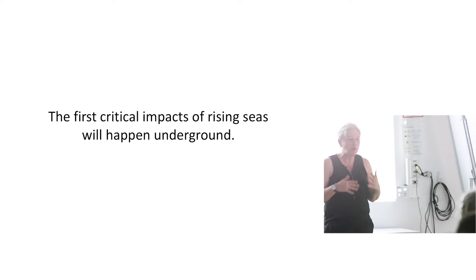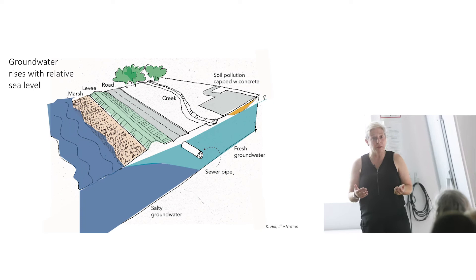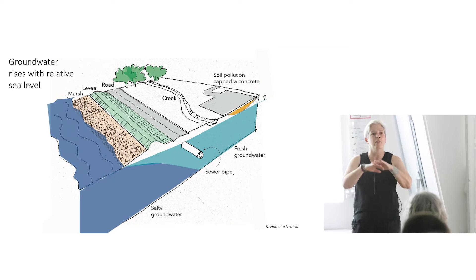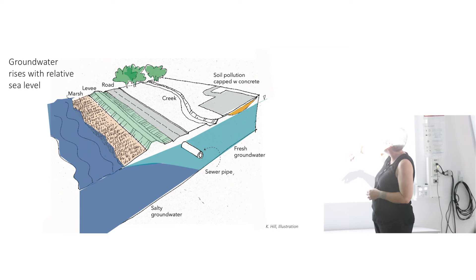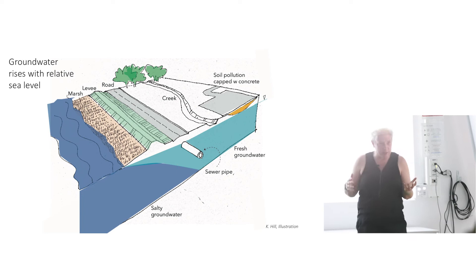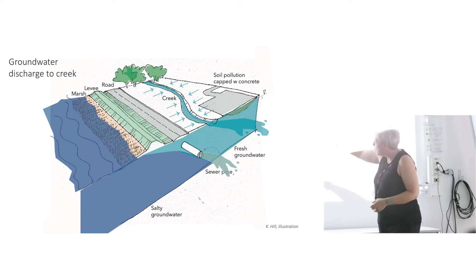So what's going to happen as the sea rises, most of us are imagining the sea coming onto the land. But what's really going to happen is that water is going to come up through the ground, that freshwater. The first things that are going to happen are underground, which is hard for the public to visualize. It's actually hard for most designers to visualize what's in that three-dimensional volume under the surface of the land. This dark blue represents salty groundwater, and the light blue, fresh groundwater.